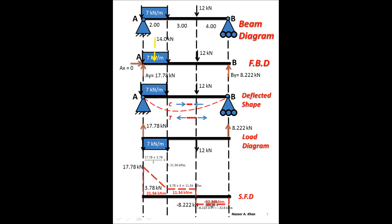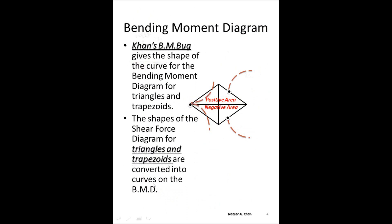We now have all the information needed to construct the bending moment diagram. When we have rectangles on the shear force diagram, those become straight lines on the bending moment diagram. When we have triangles or trapezoids, those become curves. Different orientations of the triangle represent different types of curves — concave and convex — and negative moments produce different curve shapes too. I'll show you an easy way to remember these curves: the bending moment bug, which you won't find in any textbook.